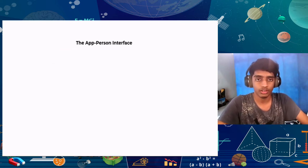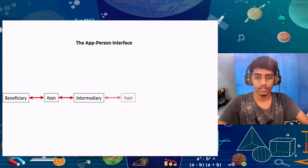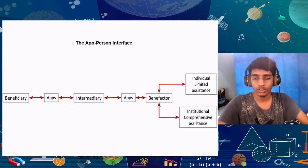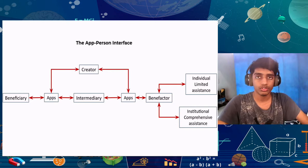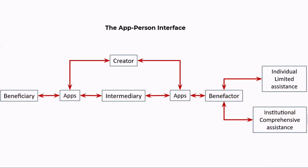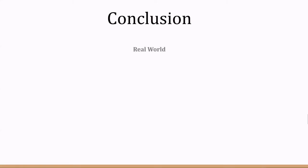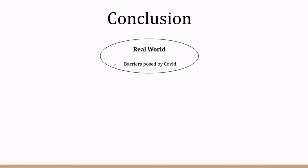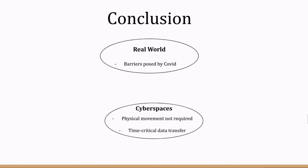From these findings, we can map an app-person interface: a beneficiary can use an app to connect with an intermediary, who can connect with a benefactor providing individual or institutional assistance. A creator can create apps, supply them to users, and make changes based on user feedback. In conclusion, there are real-world barriers posed by COVID, but in cyberspaces there is no physical movement required and time-critical data transfer is possible. A data query can be sent from the real world into cyberspace, and a data response sent back upon which action can be taken.